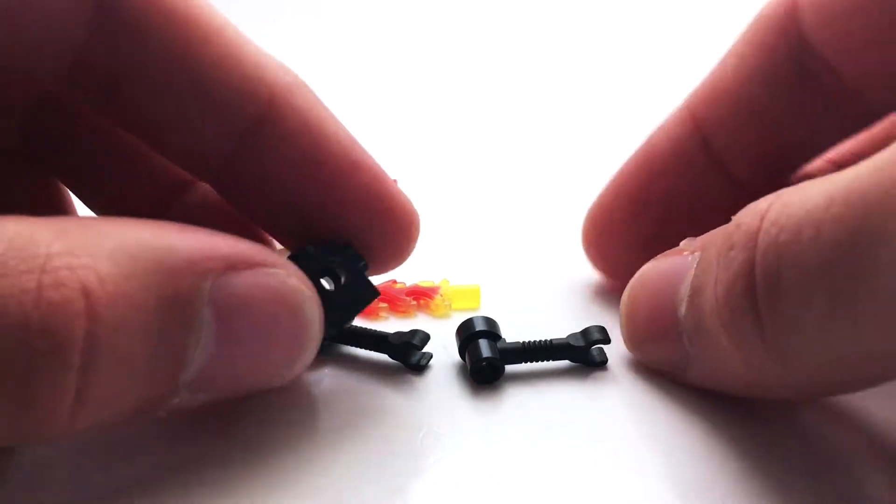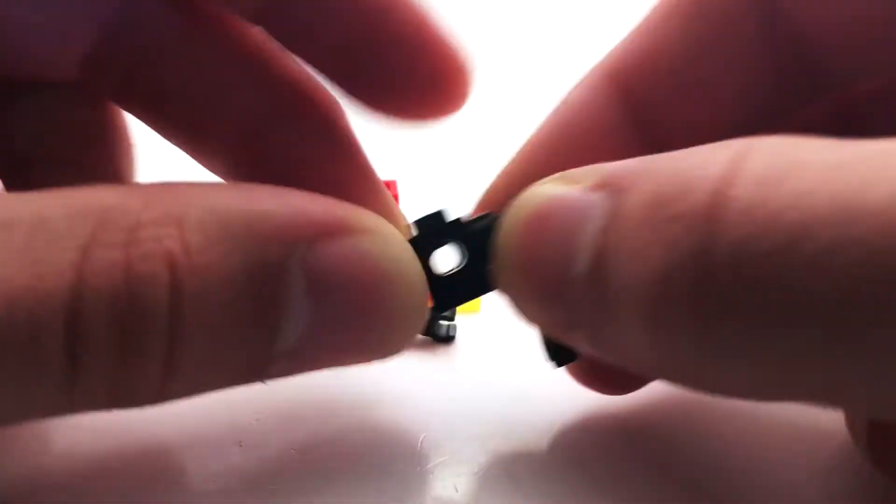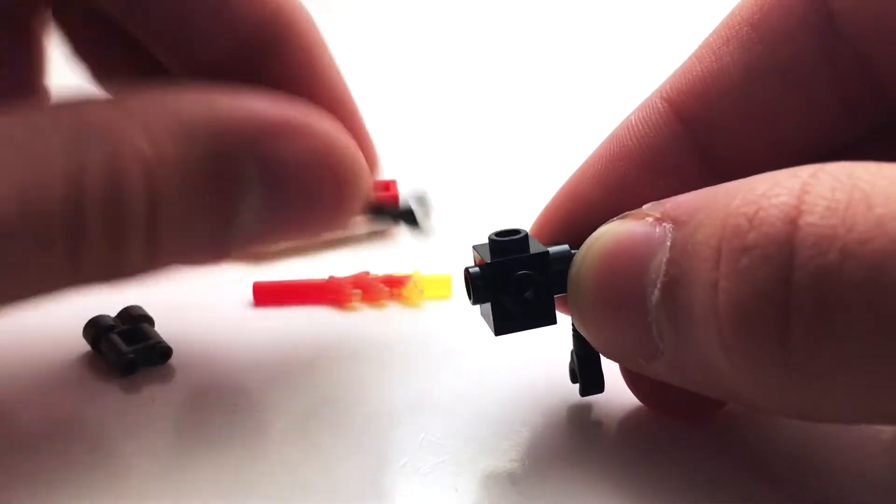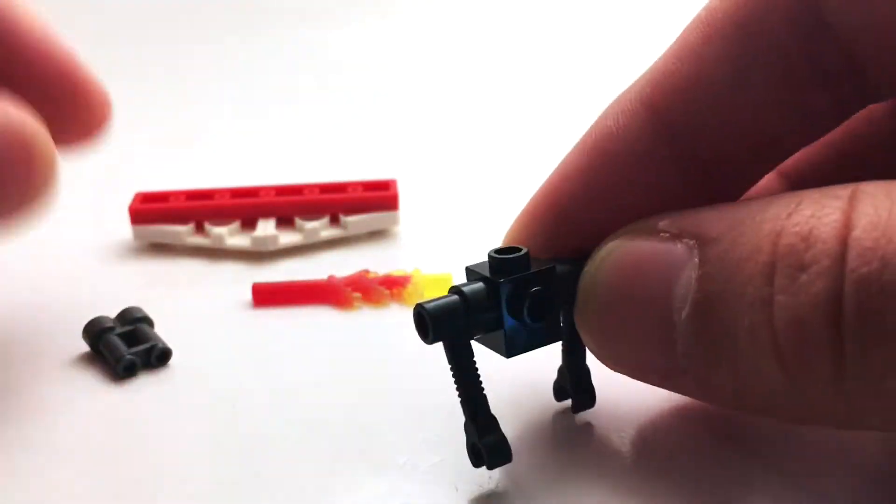Then the rest of the bot is all centered around this 1x1 with studs on all four sides. We've got these two nice arms here.